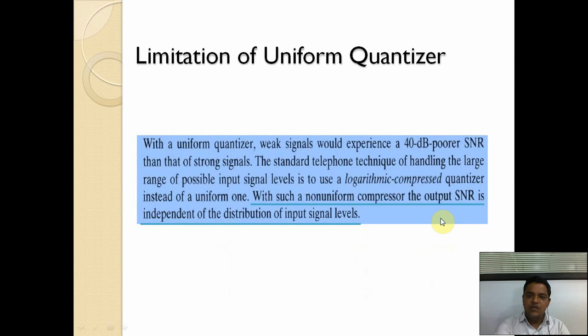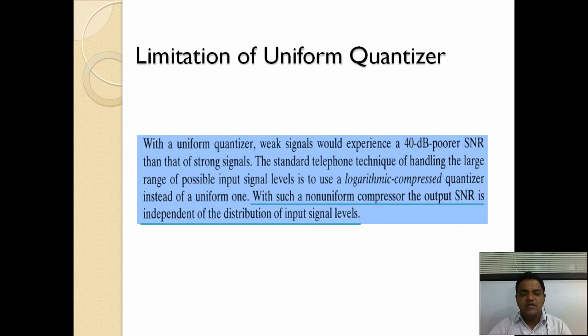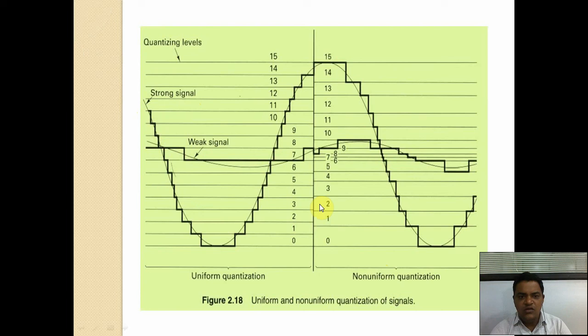A limitation of the uniform quantizer is that a weak signal experiences approximately 40 dB poorer signal-to-noise ratio compared to a strong signal. The standard telephone technique for handling a larger range of input levels uses a logarithmic compressor quantizer instead of a uniform one. With such a non-uniform compressor, the output SNR is independent of the distribution of input signal levels. In uniform quantization, the step size is constant for both strong and weak signals.